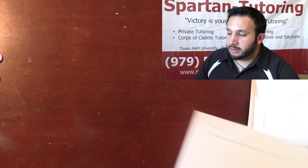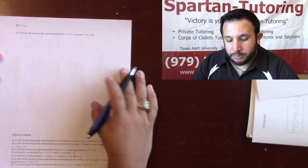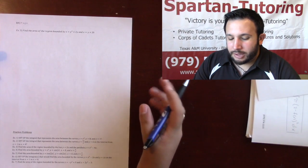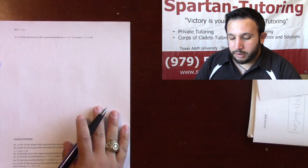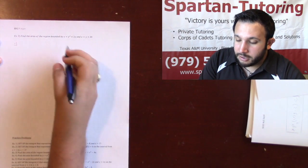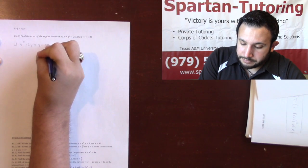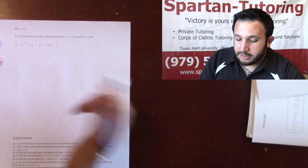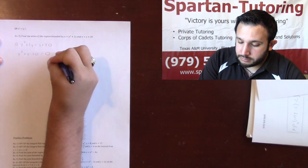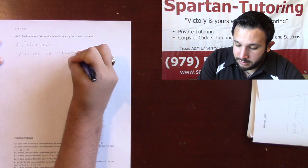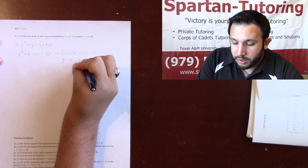Number three: find the area of the region bounded by x = y² + 2y and x = y + 20. Now we have functions of y and people freak out — they say I don't know what to do because I can't draw this. These three steps still work. Step one: set y² + 2y = y + 20. Moving everything over gives y² + y − 20 = 0. Factoring: (y + 5)(y − 4) = 0, so y = −5 and y = 4. These are our limits of integration.